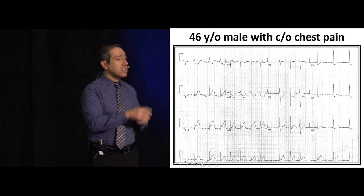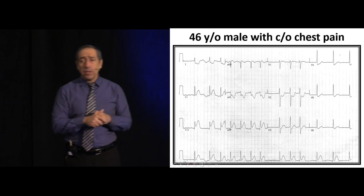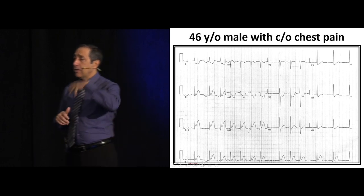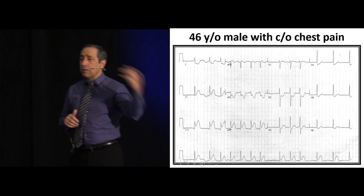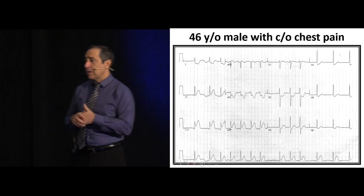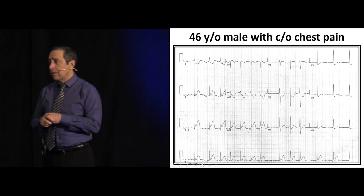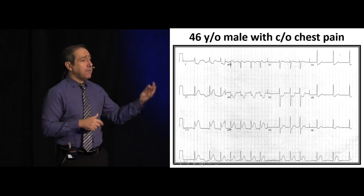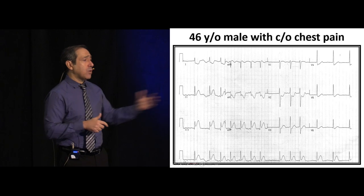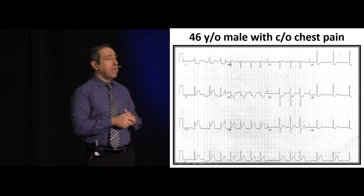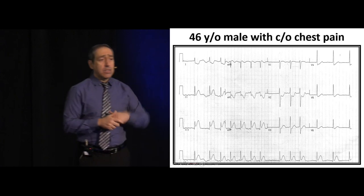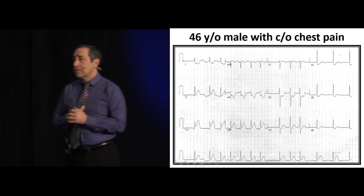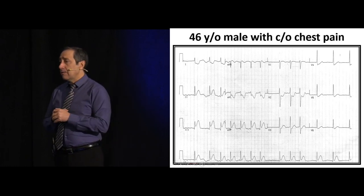So we may have three scenarios with inferior myocardial infarction. One: the right ventricle, inferior, and posterior aspect of the left ventricle are all involved. Two: you only have inferior posterior MI and your right ventricle is okay. Three: your right ventricle is okay, the posterior aspect is okay, and only the inferior part is involved.